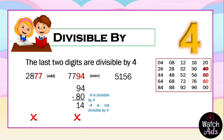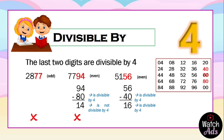Next, we have 5,156. We will check if it is odd or even. Yes, it is even because it ends in 6. Next, we check the three highlighted numbers: 40, 60, and 80. The largest we can subtract from 56 is 40. 56 less 40 is equal to 16. We subtracted 40 because 40 is divisible by 4. We end up with 16, and we know that 16 is divisible by 4. Which means 5,156 is also divisible by 4.